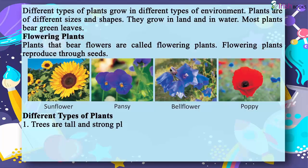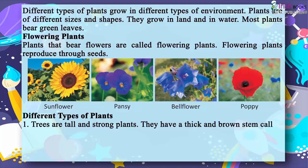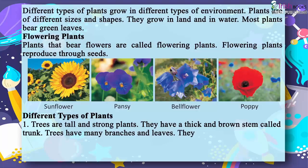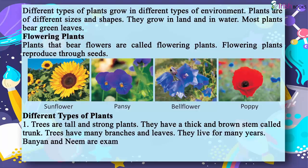1. Trees are tall and strong plants. They have a thick and brown stem called trunk. Trees have many branches and leaves. They live for many years. Banyan and neem are examples of trees.